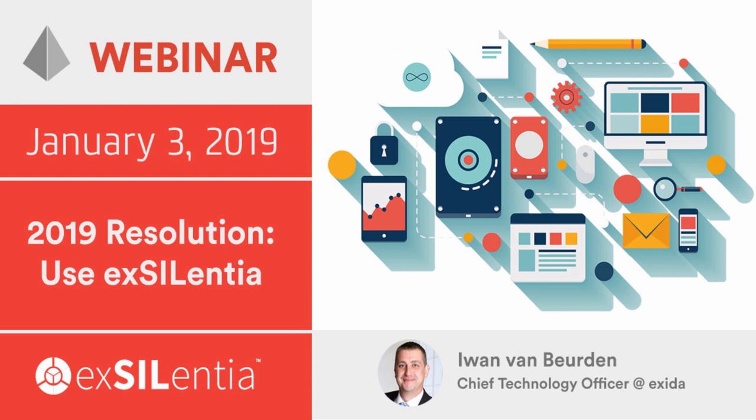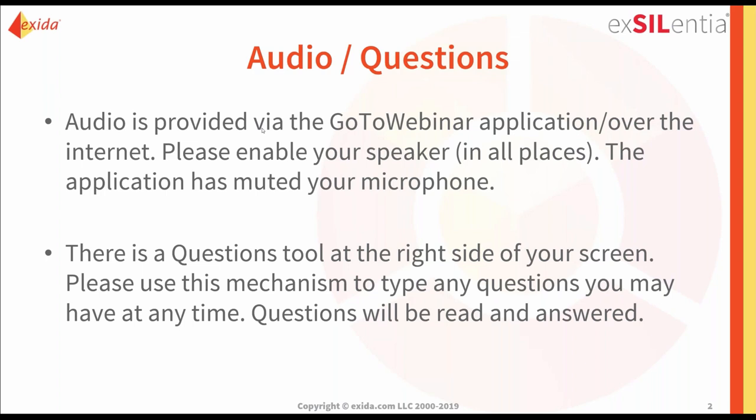As you're probably familiar with our webinars, the audio is provided via the GoToWebinar application, so you need to enable your speakers. The application has automatically muted your microphone, so I can talk but you cannot. There is a questions tool on the right-hand side in your GoToWebinar panel — please type your questions there and I will read them out and answer them to the best of my ability.